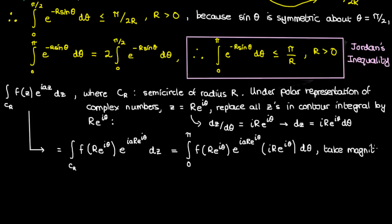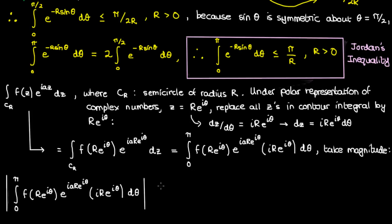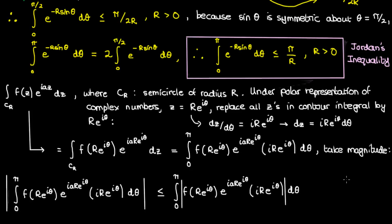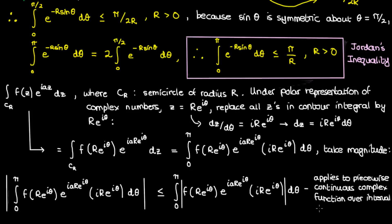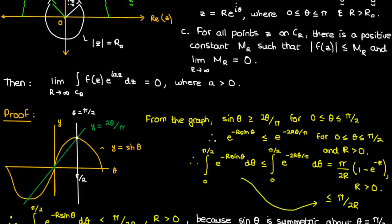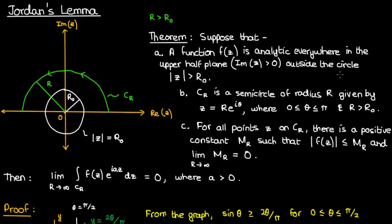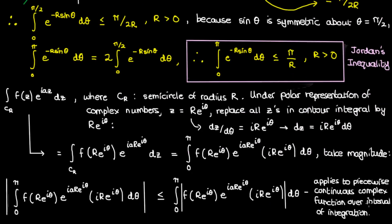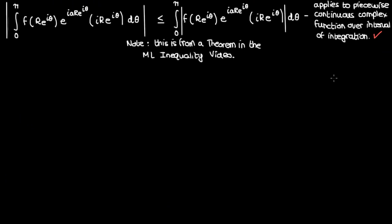Let's now take the magnitude of this entire integral. If you recall a theorem proved in my ML inequality video — link in the description — you'll remember that the magnitude of the integral is less than or equal to the integral of the magnitude. This theorem applies to a complex function that's piecewise continuous over the interval of integration. Going back to our assumptions, f(z) is analytic everywhere outside the smaller circle of radius R₀, so this integral magnitude theorem can be safely applied.